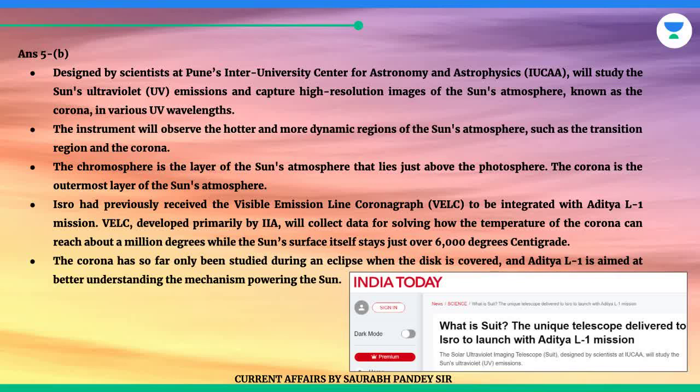ISRO had previously received the Visible Emission Line Coronograph, VELC, to be integrated with the Aditya L1 mission. VELC, developed primarily by IIA, will collect data for solving how the temperature of the corona can reach about a million degrees while the sun's surface itself stays just over 6,000 degrees centigrade. The corona has so far only been studied during an eclipse, and Aditya L1 is aimed at better understanding the mechanism powering the sun.